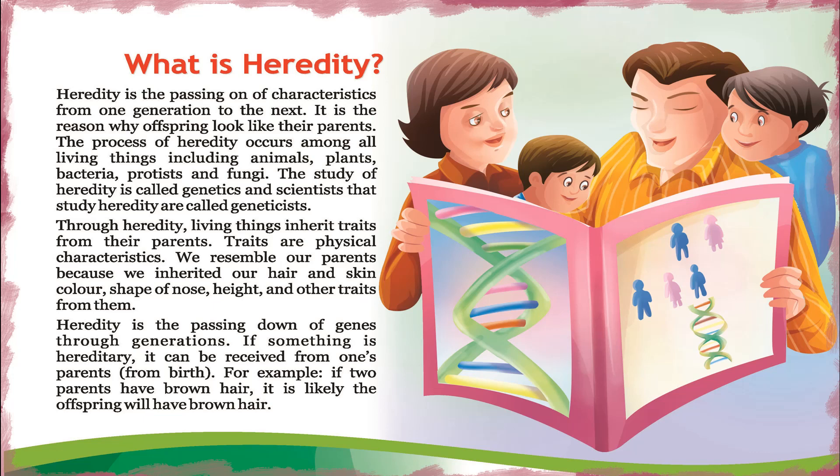We resemble our parents because we inherited our hair and skin color, shape of nose, height, and other traits from them. Heredity is the passing down of genes through generations. If something is hereditary, it can be received from one's parents from birth. For example, if two parents have brown hair, it is likely the offspring will also have brown hair.